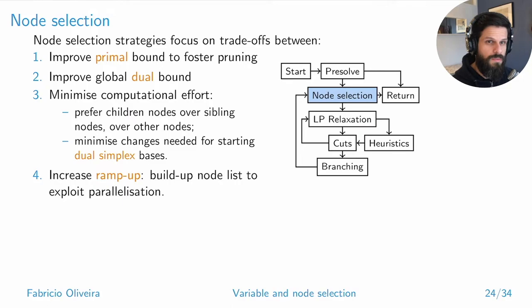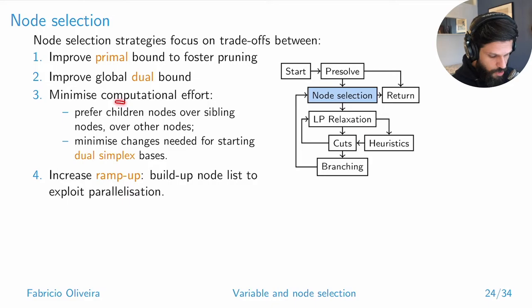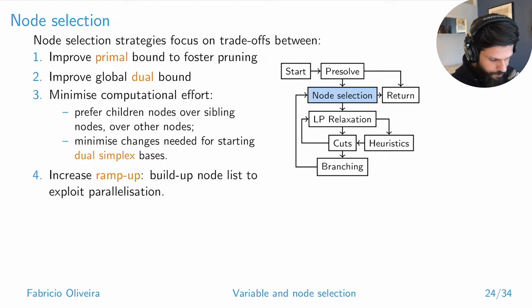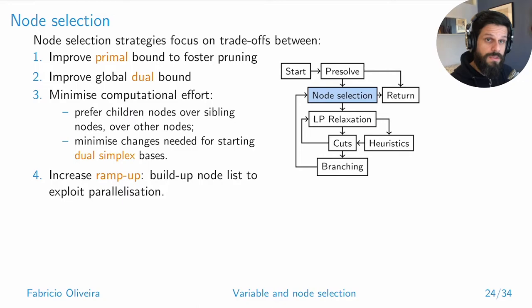Computational effort is also a key factor. Once you solve a problem and add a constraint, you can call dual simplex and solve efficiently because the sub-problems are very similar. This creates a preference: solving children nodes should be easier than solving sibling nodes, since a child only has one additional constraint, while a sibling has a different constraint altogether. Nodes further up in the tree have greater dissimilarity.